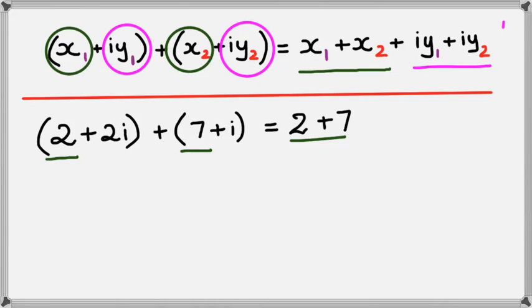Now we collect the imaginary parts. We just do the real parts first, 2 plus 7, and then the imaginary parts, which is 2i and i, so it's 2i plus i.